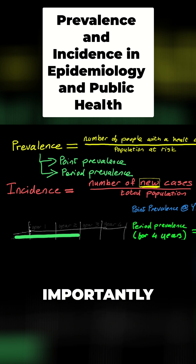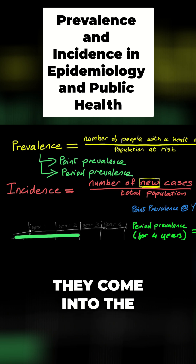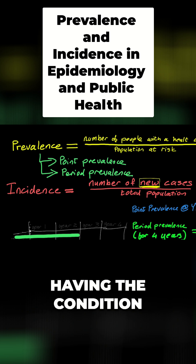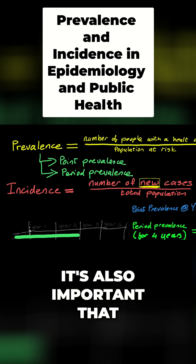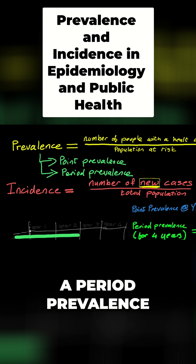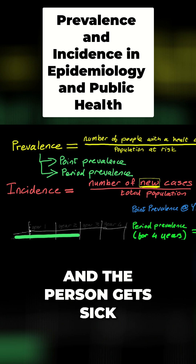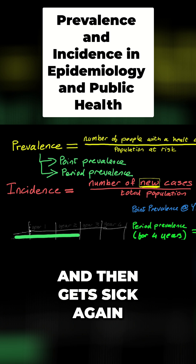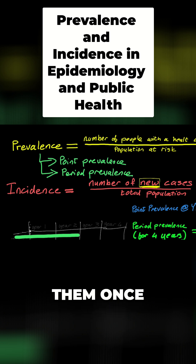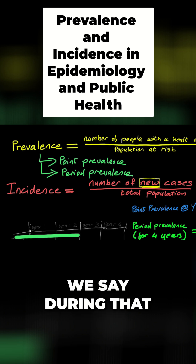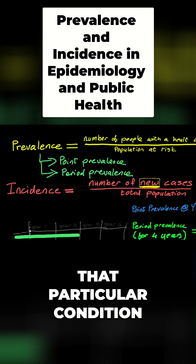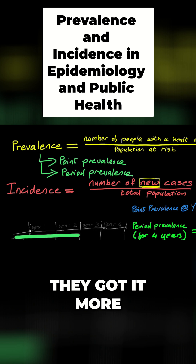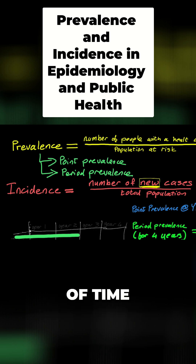Importantly, for period prevalence, people still count if they come into the period of time already having the condition — that becomes important when we talk about incidence, where that's not the case. It's also important that if we're dealing with a period prevalence, like a four-year period, and the person gets sick, recovers, and then gets sick again, we still count them just once. We're answering the question: did they or did they not get that condition in that period of time?